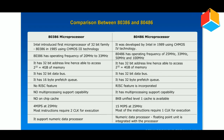The 80386 microprocessor has a 16-byte prefetch queue, and no RISC feature. The 80486 has a 32-byte prefetch queue, and RISC feature is incorporated.